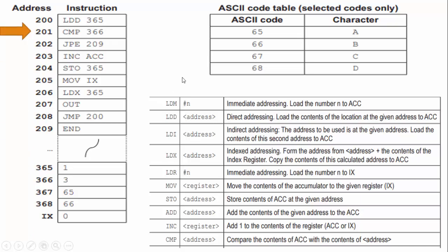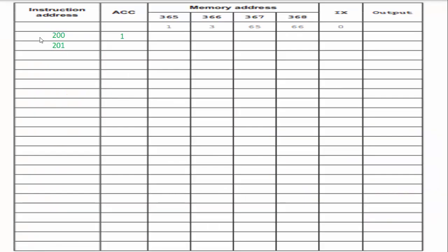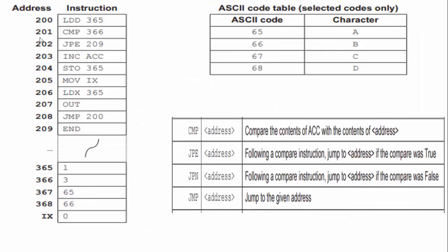The next one is line 201, CMP. I look on my chart. CMP says compare the contents of the accumulator with the contents of the address. My accumulator is currently the value of one. I compare that with 366, which is three. They are not equal. Because line 201 ran, I'm going to put that into my trace table. Nothing else updates.